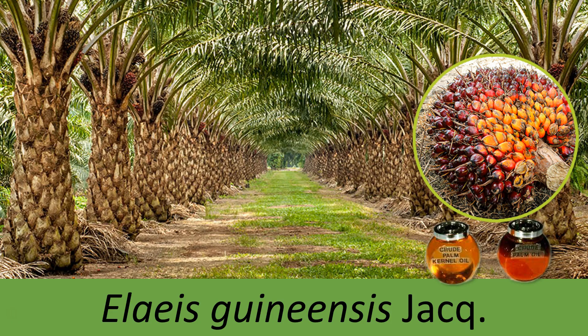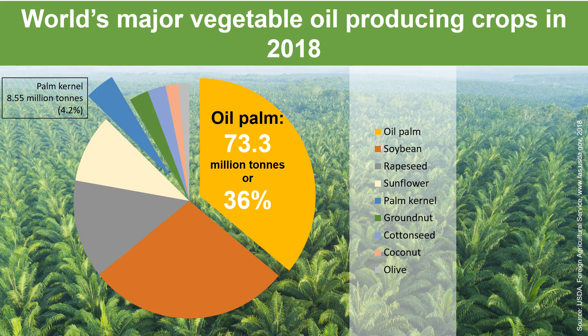Just a brief introduction. Oil palm is cultivated mainly for oil. Oil palm can produce two types of oil: the main one is crude palm oil (CPO), and the second one is palm kernel oil (PKO). Oil palm contributed 73.3 million tons of palm oil, or 36 percent of global supply in 2018, based on data obtained from USDA — and this does not include palm kernel oil which contributed 4.2 percent.